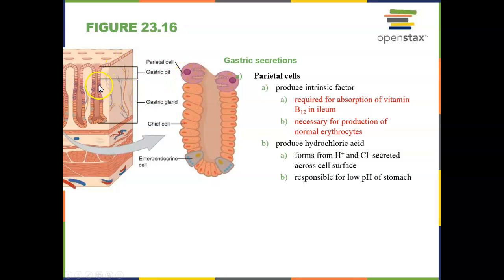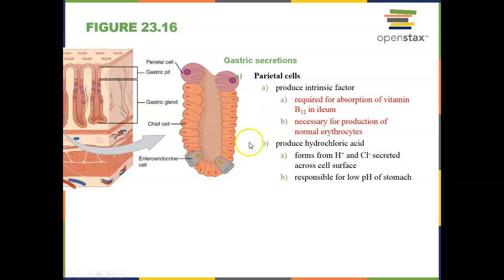Parietal cells are interspersed throughout the gastric glands and produce two major chemicals. First, intrinsic factor, which is important for absorption of vitamin B12 in the ileum of the small intestines and helps with the production of erythrocytes — without B12 we cannot produce erythrocytes effectively, a condition known as pernicious anemia. Second, parietal cells produce hydrochloric acid: hydrogen ions and chloride are secreted across the cell surface, forming HCl, which decreases pH and increases acidity, necessary for enzymes to work effectively.